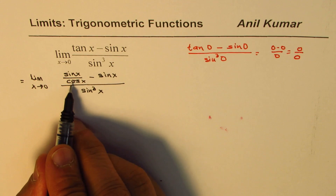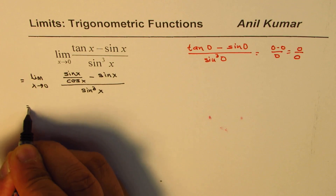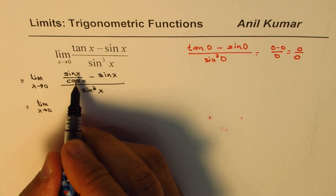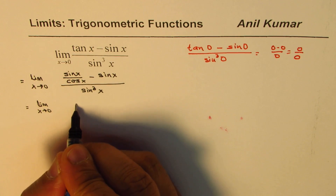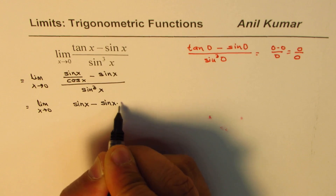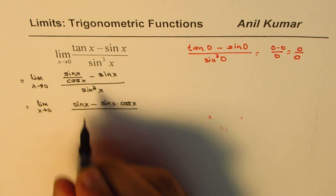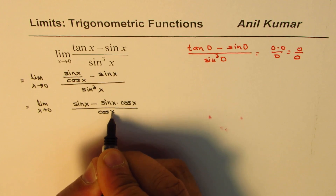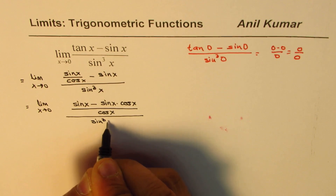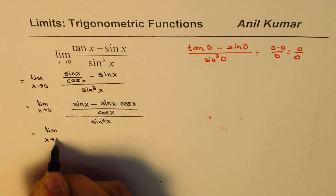Now we can take cos x as common denominator. So what we get here is limit x approaches 0. We have sin x minus sin x cos x divided by cos x, everything divided by sin cube x. This could be written as limit x approaches 0,